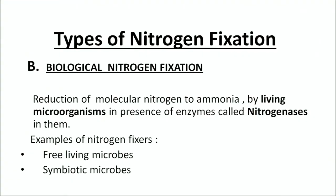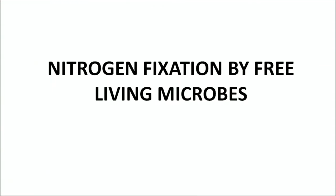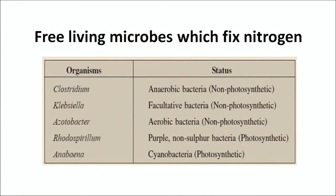The second chief type is biological nitrogen fixation. It is called biological because it involves living organisms, and these organisms have nitrogenase enzymes. Examples of nitrogen fixers include free-living microbes such as Clostridium (anaerobic bacteria), Klebsiella (facultative bacteria), Azotobacter (aerobic bacteria), Rhodospirillum (purple non-sulphur bacteria), and Anabaena, an important cyanobacteria performing photosynthesis.